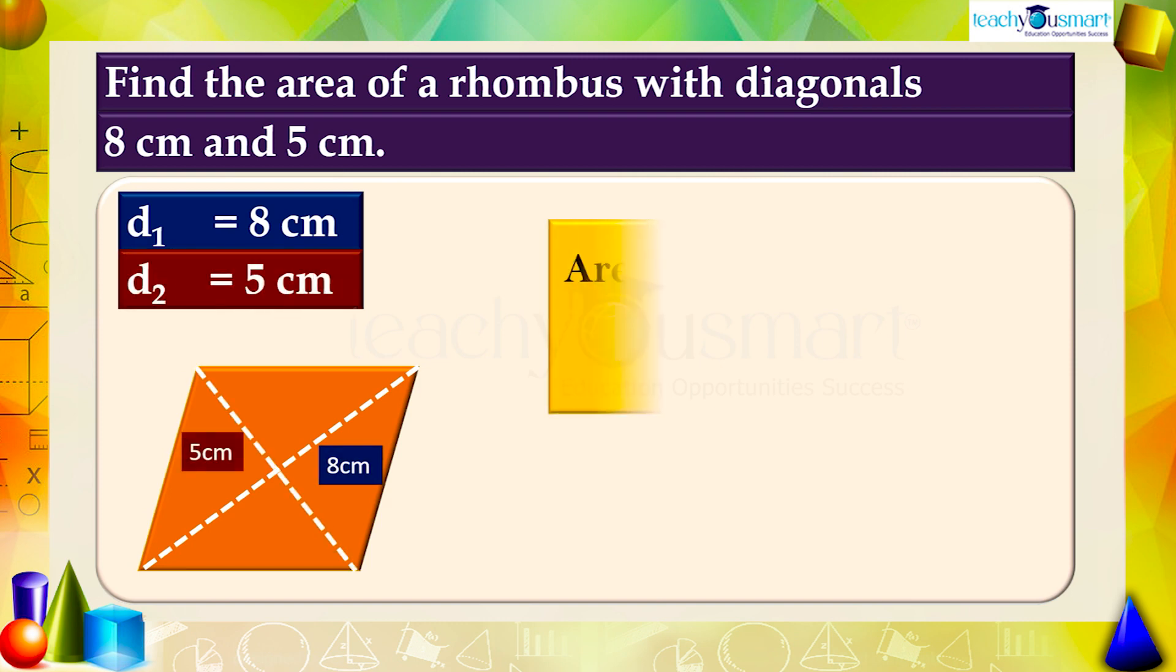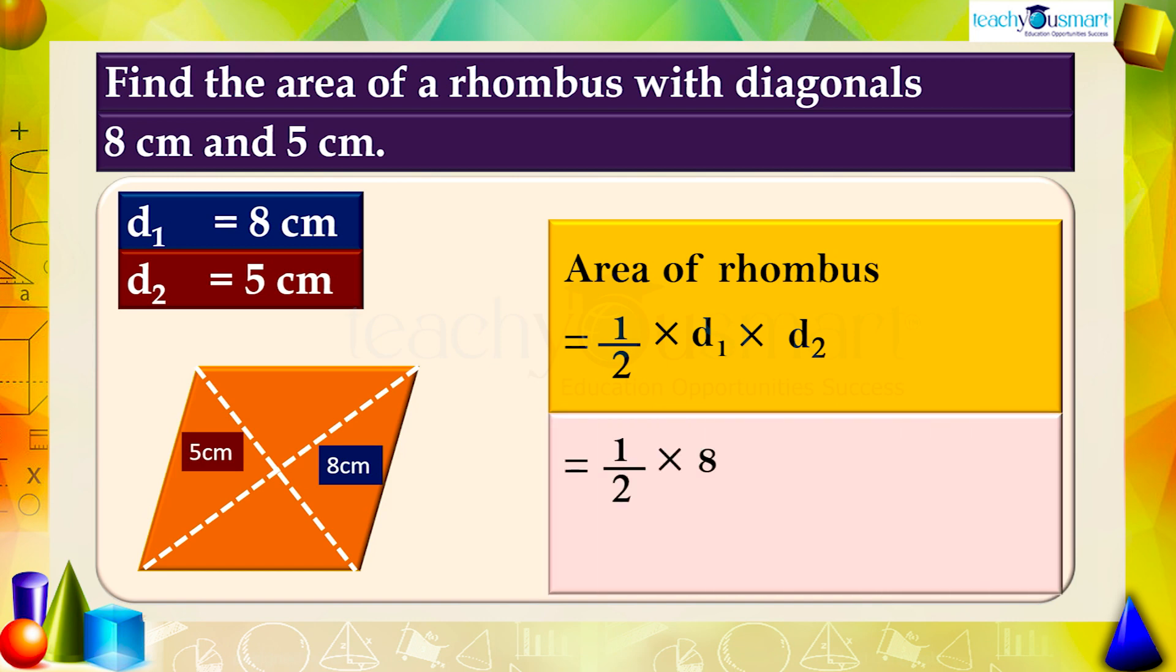Therefore, area of rhombus = 1/2 × D1 × D2 = 1/2 × 8 × 5 = 20 square cm.